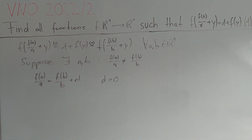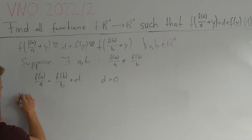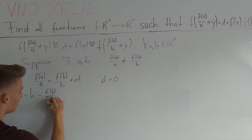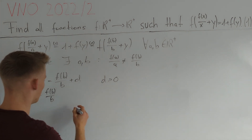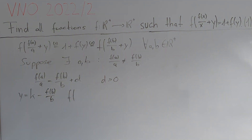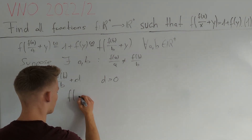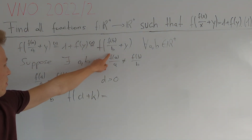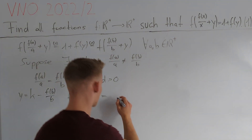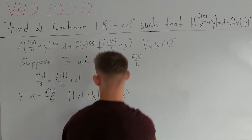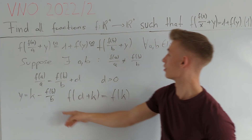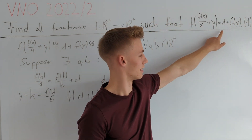To make this equation look nicer, we substitute y = k − f(b)/b into the equation and get that f(f(a)/a − f(b)/b) = d + k. So d + k = f(f(b)/b − f(b)/b + k) = f(k). Note that k must be greater than f(b)/b because we can only put positive real numbers inside this equation.